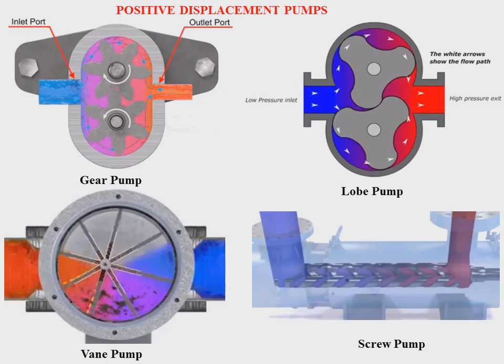The third one is the vane pump. In the vane pump, you can see there are a number of slots, and these are known as vanes. The length of the vane varies from the suction side to the delivery side — the blue color side is the suction side. Due to this variation of the vane, the flow will continue.